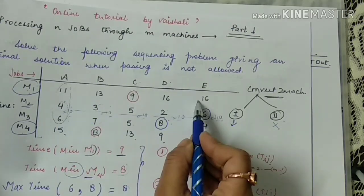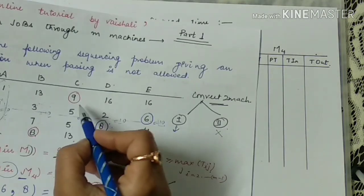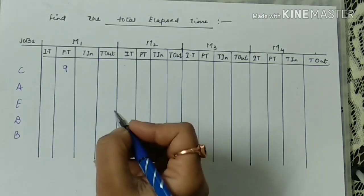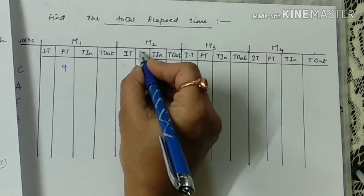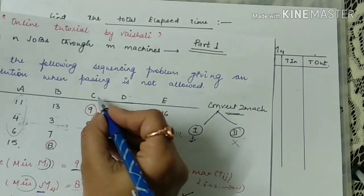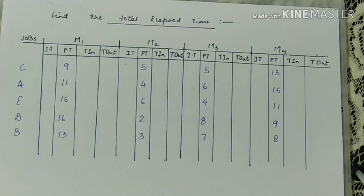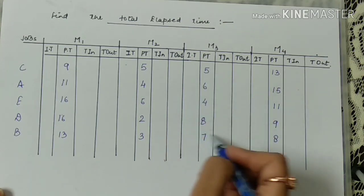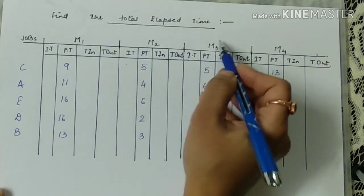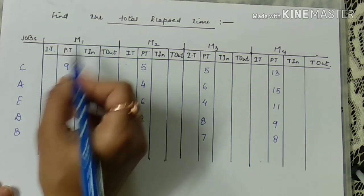For the elapsed time calculation, we use the full original four-machine problem — not the modified two-machine matrix. The processing times for each job on each machine are copied into the table. For job C: processing time on M1 is 9, on M2 is 5, on M3 is 5. After filling all processing times, we find idle time, time-in, and time-out to get the total elapsed time.